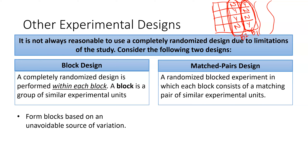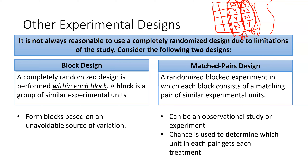A matched pairs design can be used in either an experiment or an observational study. In a matched pairs design, it is a randomized block experiment where each block consists of a matching pair of similar units. In an experimental context, chance is used to randomly assign one of the paired individuals to receive a treatment and the other not.